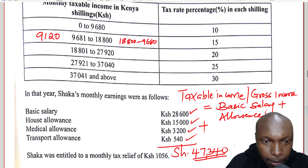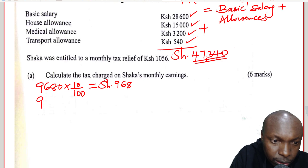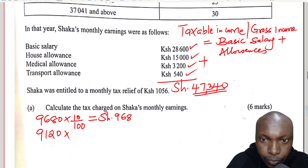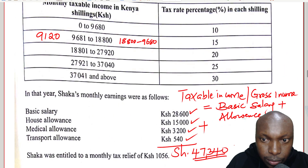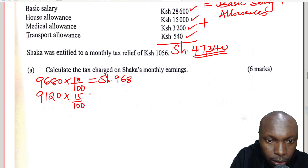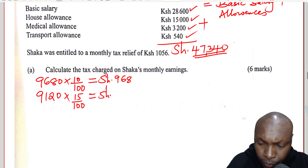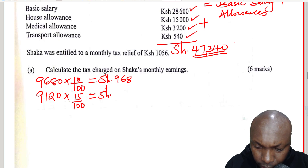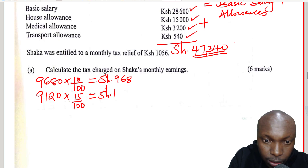For the second slab, 9,120 multiplied by 15% gives 1,368. We proceed. We are taxing 47,340, so we still go on to the third slab. The third slab is 27,920 subtract 18,800, and notice that the size is still 9,120. So 9,120 multiplied by 20%.